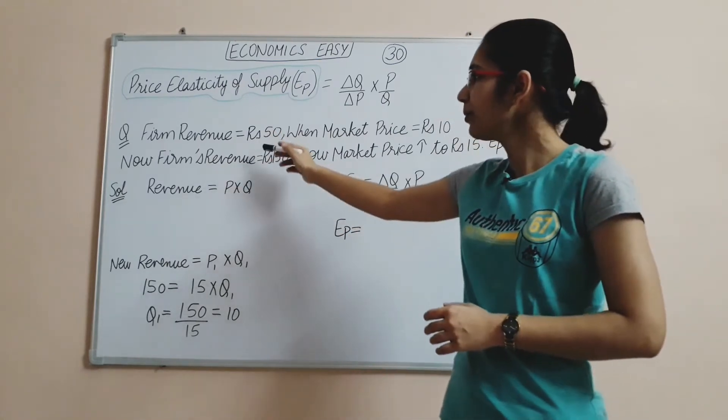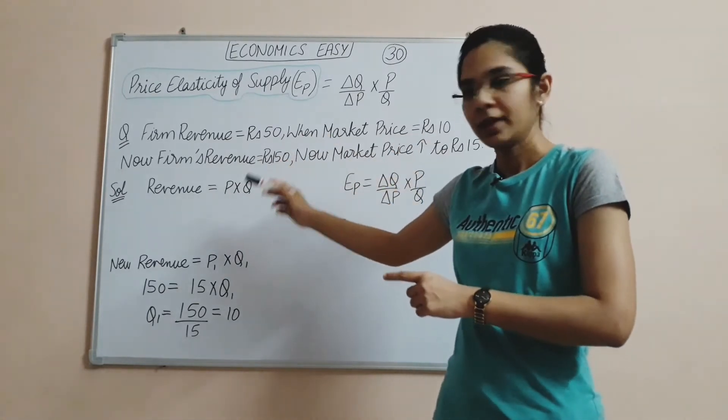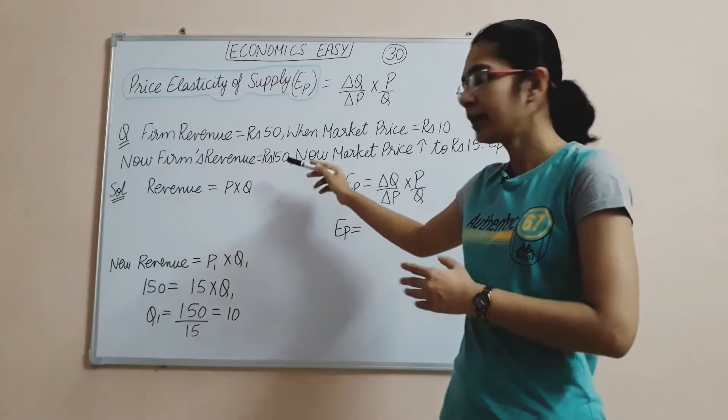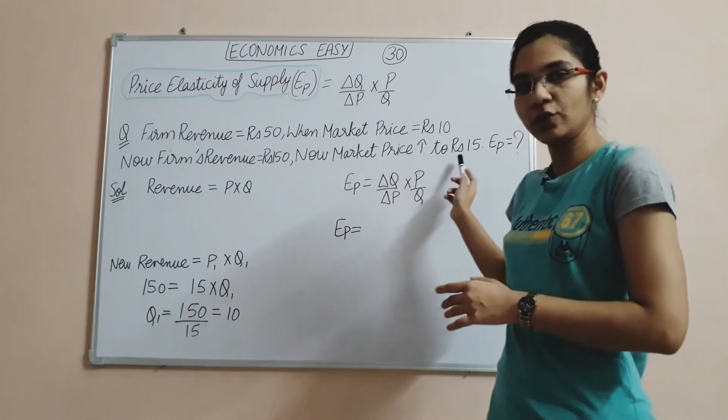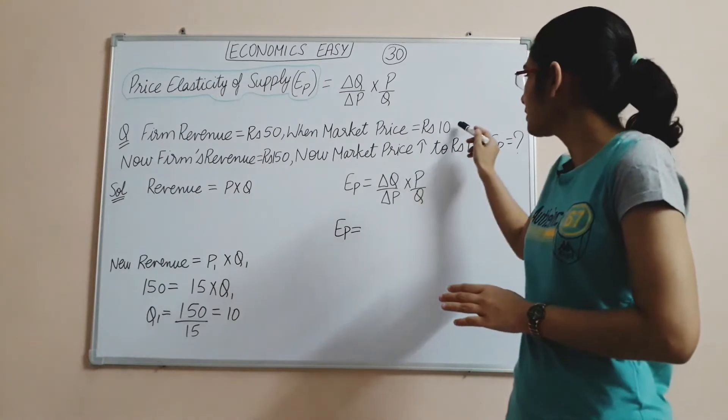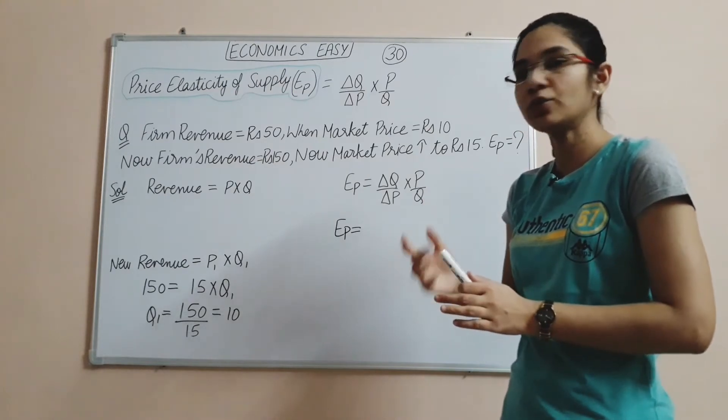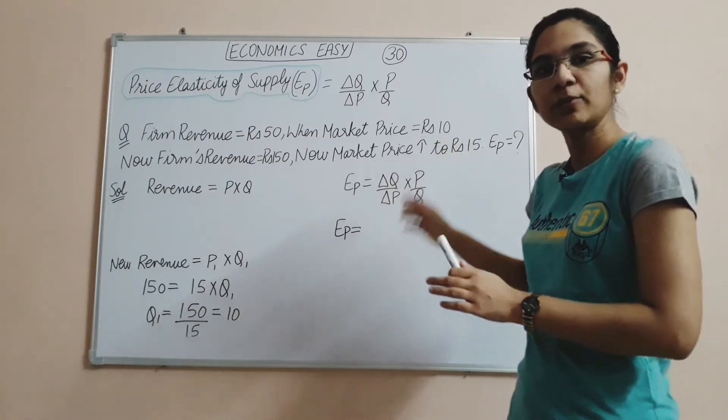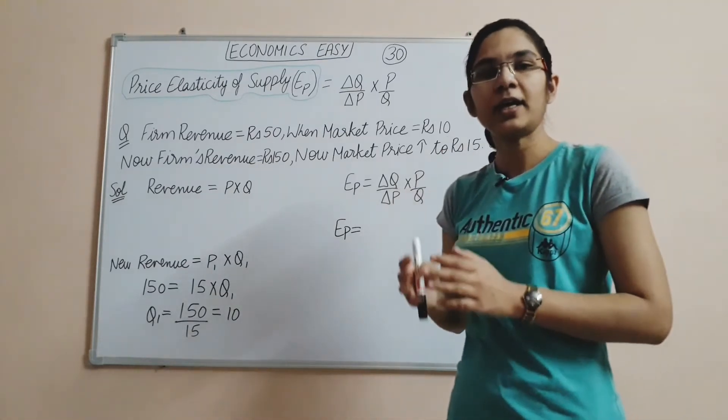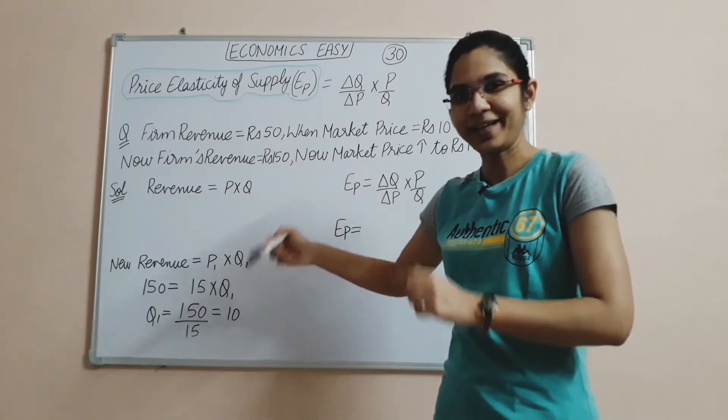Now let's see how the numerical works. Revenue was Rs 50 when the market price was 10, so the farm revenue was 50. We have studied the revenue formula in the revenue chapter. Now the revenue increased to 500, and the market price is 15. This means the market price increased to 15. Now we are asked to find the elasticity of price, or the elasticity of supply.